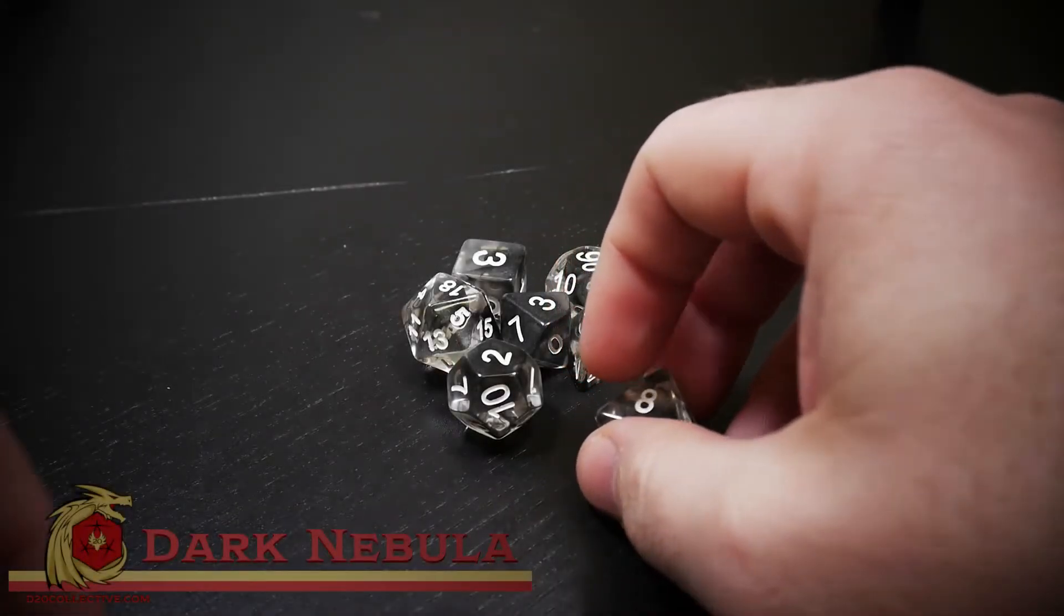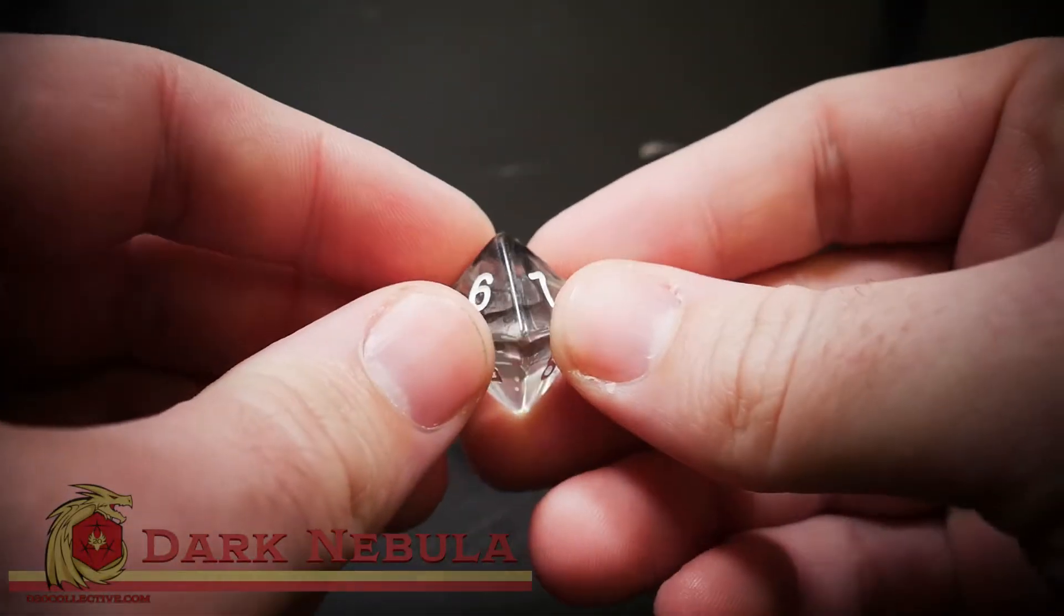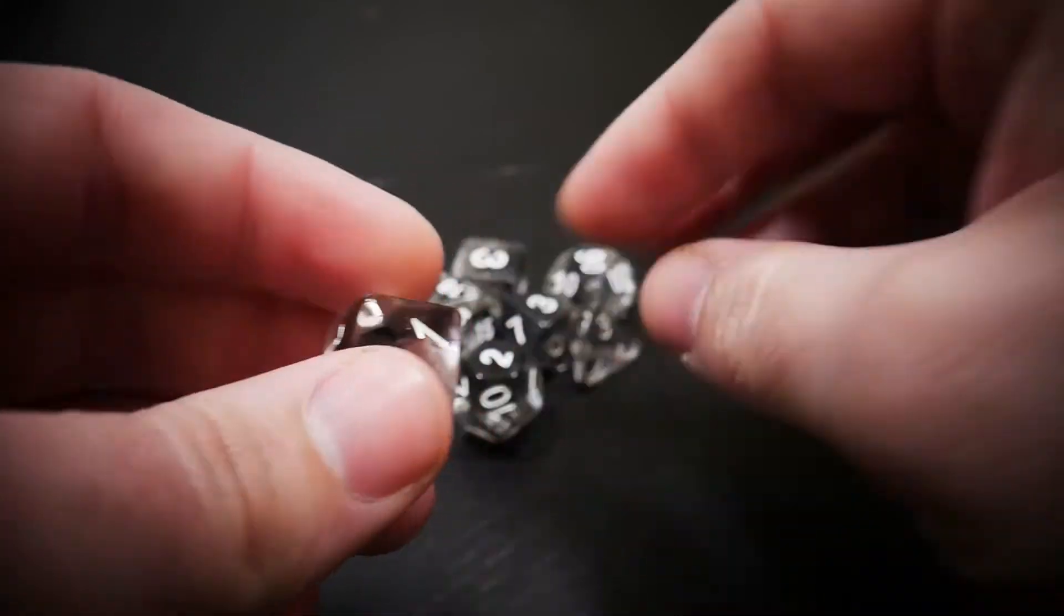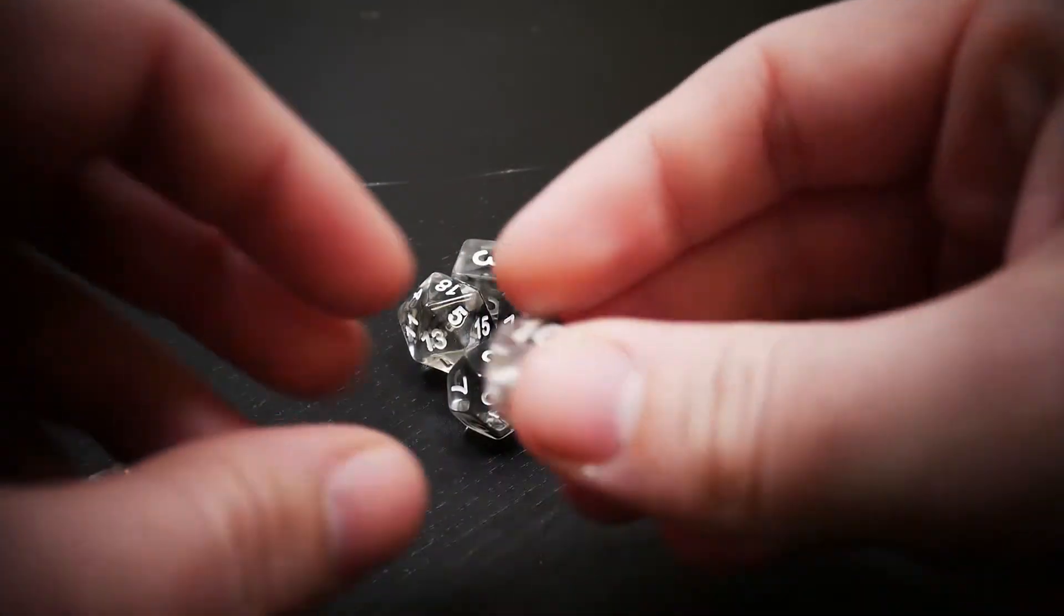Here we have Dark Nebula. These are dice that have been imbued with the smoke of a wildfire caused by reckless apprentice wizards, from what I'm told.